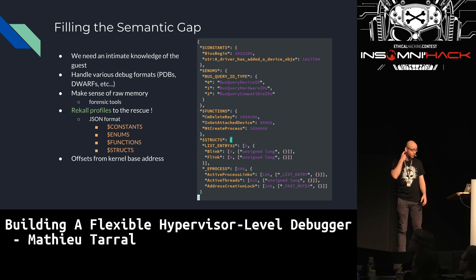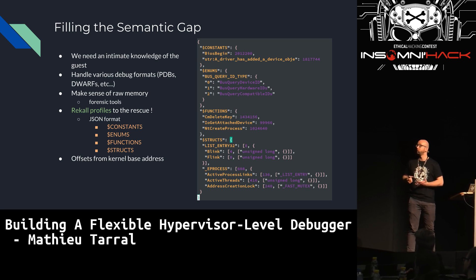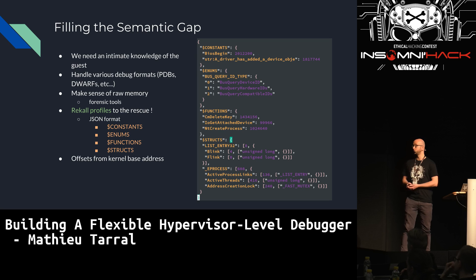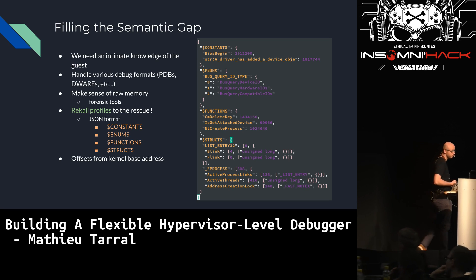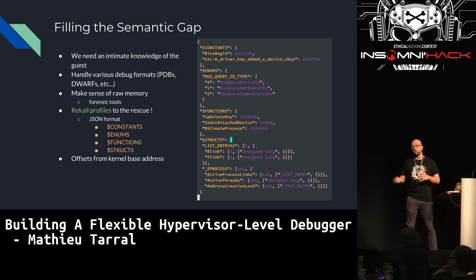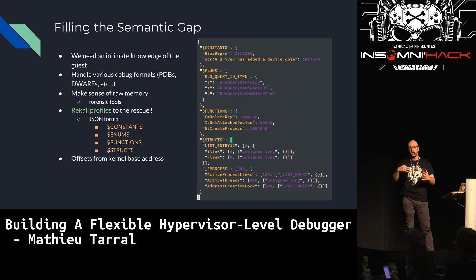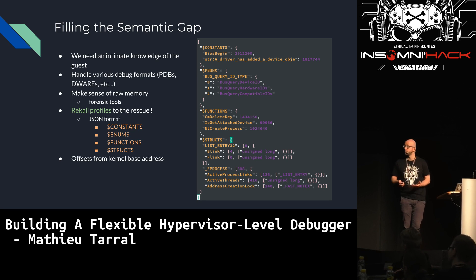To face this semantic gap challenge, we need an intimate knowledge of the guest — what it does, what it is, where the structures and functions are in memory. This is a really big job, but it's not our job since there are already tools meant to do this very well. Memory forensic tools like Rekall can build profiles — it can analyze a memory dump and give you a JSON profile with constants, functions, and structures in memory as offsets from the kernel base address. So you analyze your VM, take a memory dump, analyze with Rekall, and get this JSON file that partially fills the semantic gap.